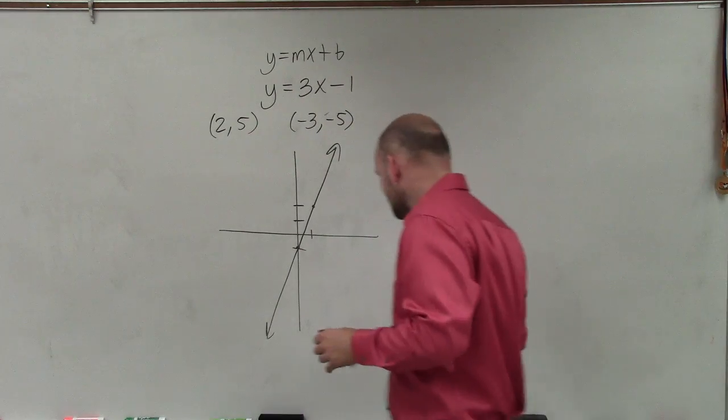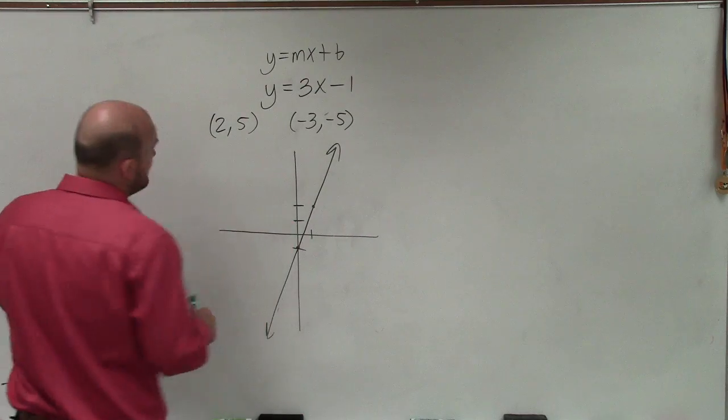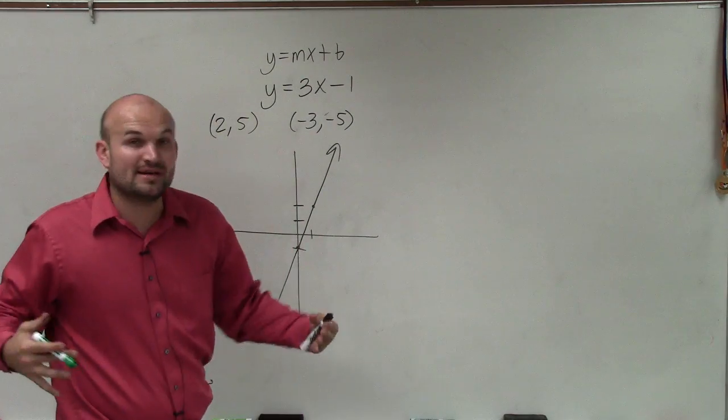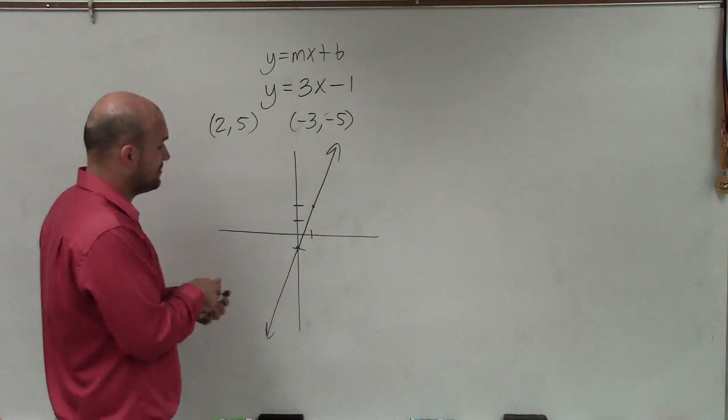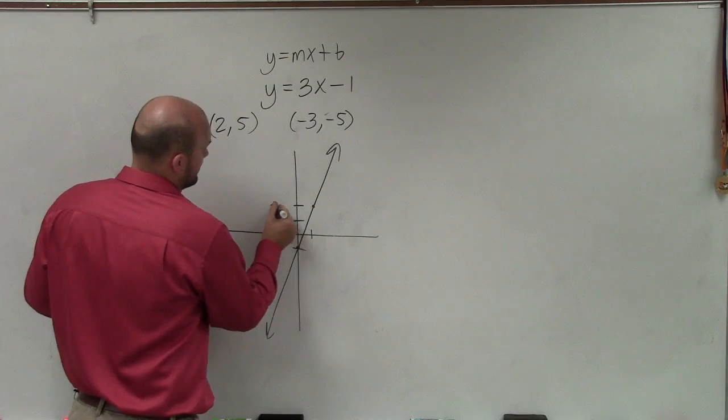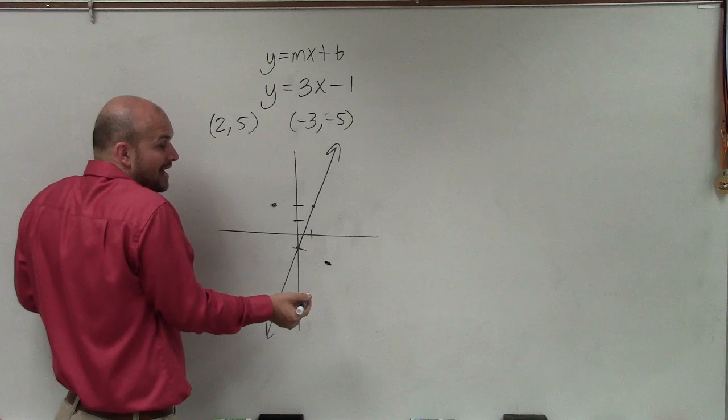Well, remember that there's infinitely many points, right? So it's possible that both of these points are on the graph. It's also possible that both of these points are not on the graph.